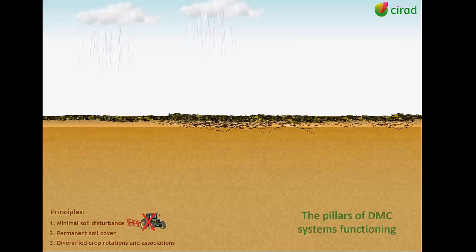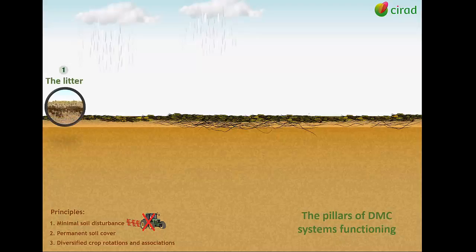The first pillar of DMC systems is the physical, biological, and chemical role played by the permanent soil cover, also called litter, in analogy with the model of a natural forest ecosystem. The litter is maintained by important biomass production and minimal soil disturbance. The litter acts as a barrier against UV radiation, therefore buffering the top soil at a cooler temperature.